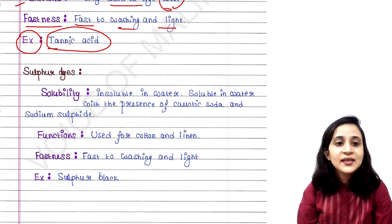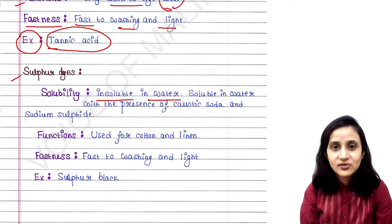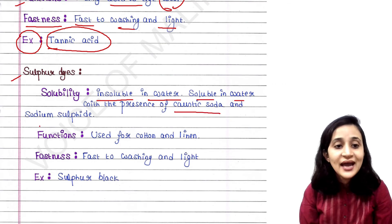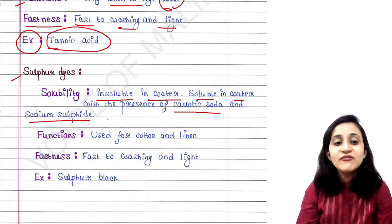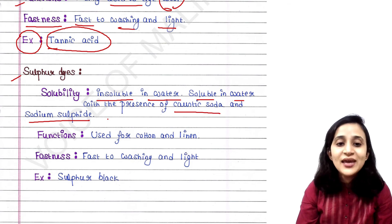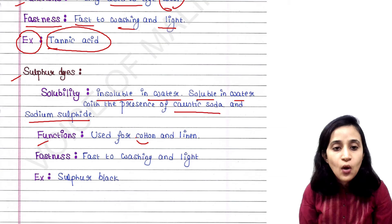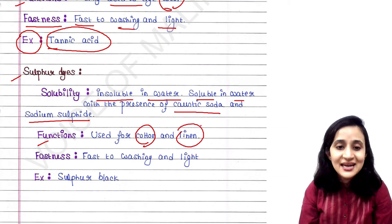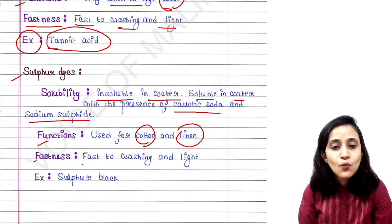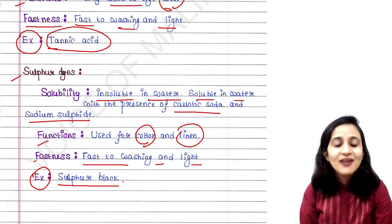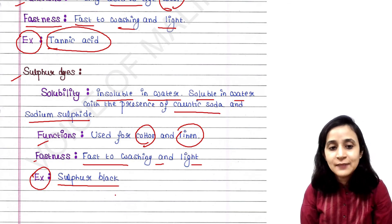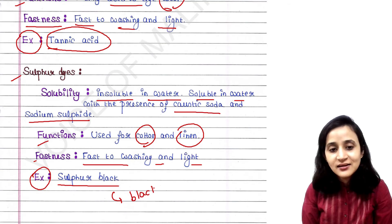Next is sulfur dye. Sulfur dyes are insoluble in water on their own, but become soluble in water with the presence of caustic soda and sodium sulfide. They are used for cotton and linen. Fastness is fast to washing and light. An example is sulfur black, which gives black color to the fabric.